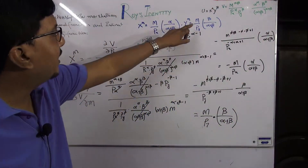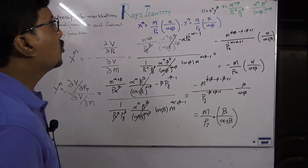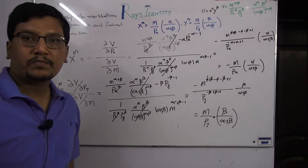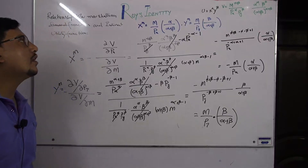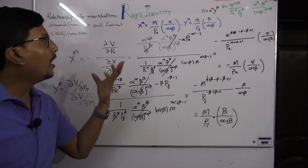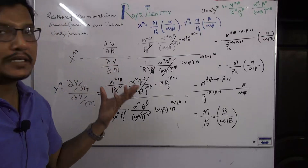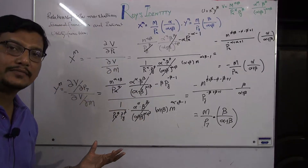So we have obtained the Marshallian demand function for y. This is a tutorial about what Roy's Identity is and what the practical implication of Roy's Identity is.